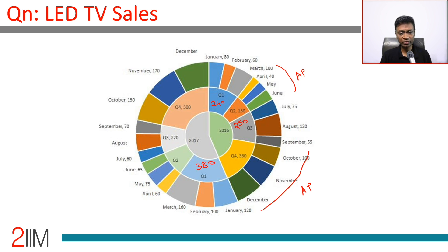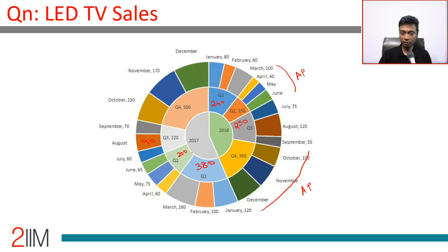For Q2 2017: 65 plus 75 is 140, plus 60 is 200. These two add up to 130, so this quarter gives 220, and the missing number should be 90. For Q4 2017, the total amounts to 500. 150 plus 170 is 320, so this number should be 180.